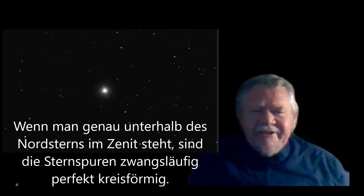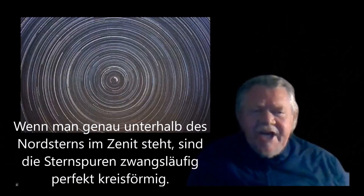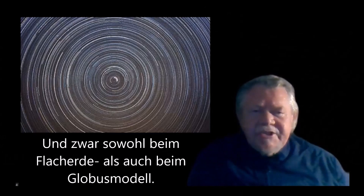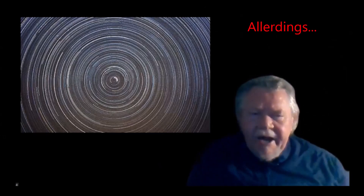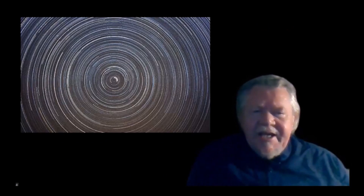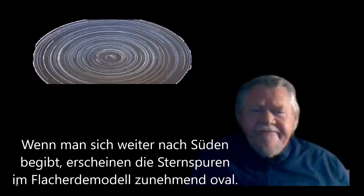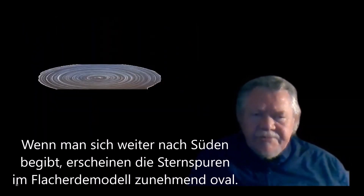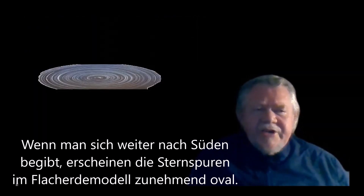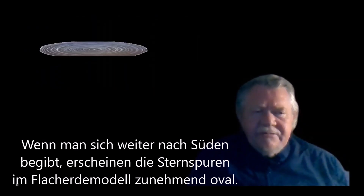Standing directly underneath Polaris at its zenith means that star trails must be perfectly circular. This would apply equally to the Flat Earth or Globe Earth models. However, as you move further and further south on the Flat Earth model, the star trails will be more and more oval.